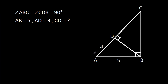In this video, we have been given that angle ABC is 90 degrees, angle CDB is 90 degrees, AB is 5, and AD is 3. We have to find CD.